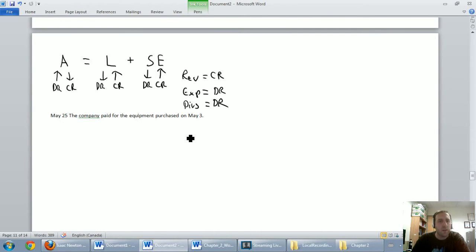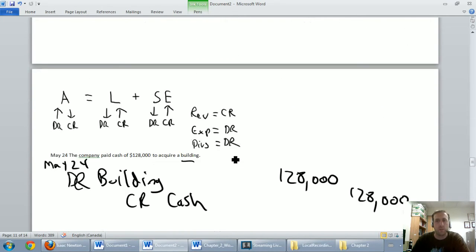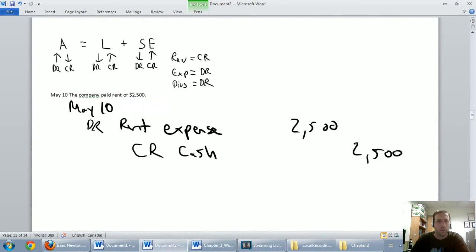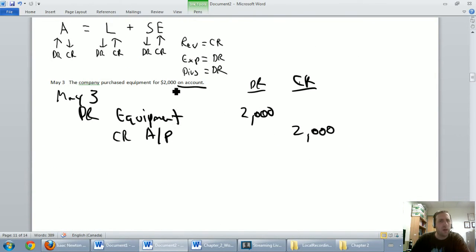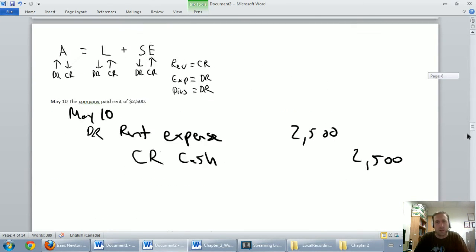May the 25th. The company paid for the equipment it purchased on May 3rd. I'm going to scroll all the way up in this problem and find May 3rd. Oh, there it was. May 3rd, we bought $2,000 of equipment on account, so we said, give us the equipment. We'll pay you later. Well, now in the entry we're looking at, we're paying them. So, how much are we paying them? $2,000? Is cash involved? Yes. Cash is going down. So, when we pay off this bill, we're going to credit our cash because cash is going down by $2,000.